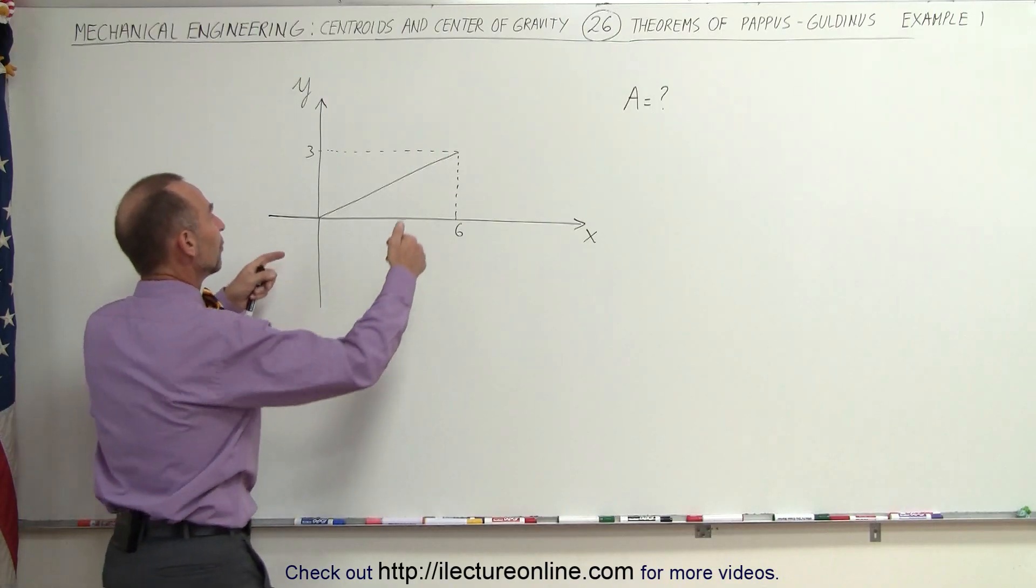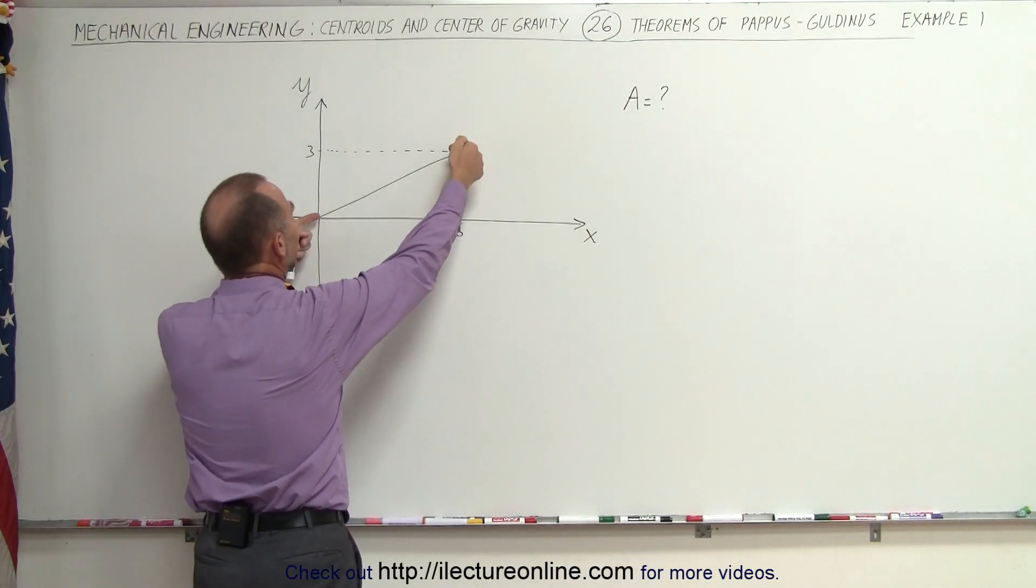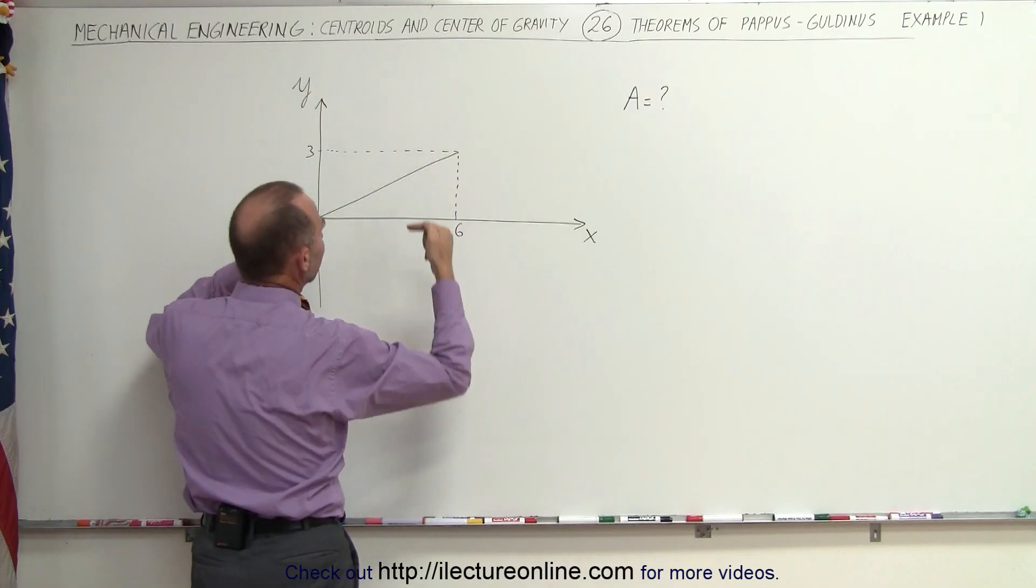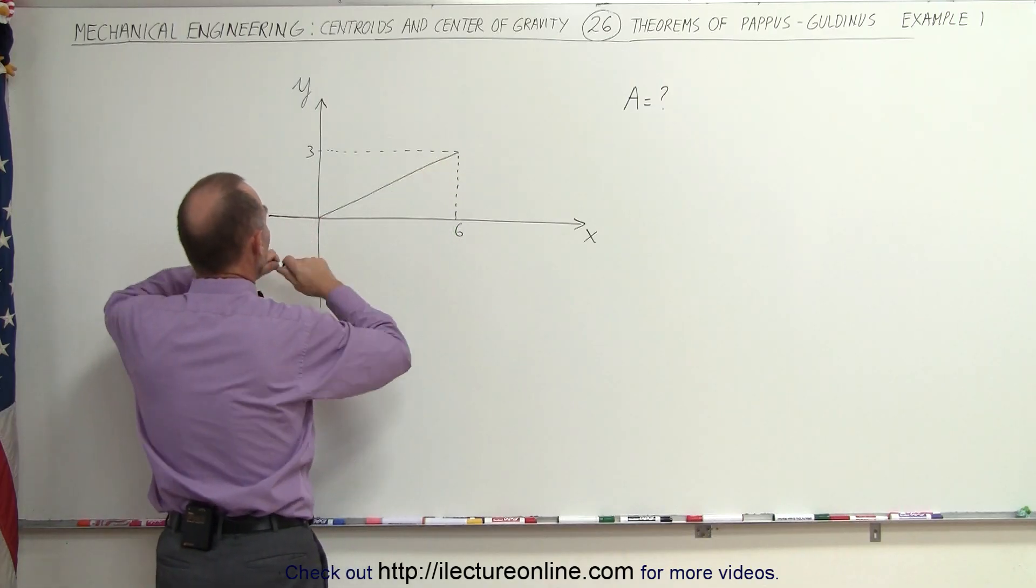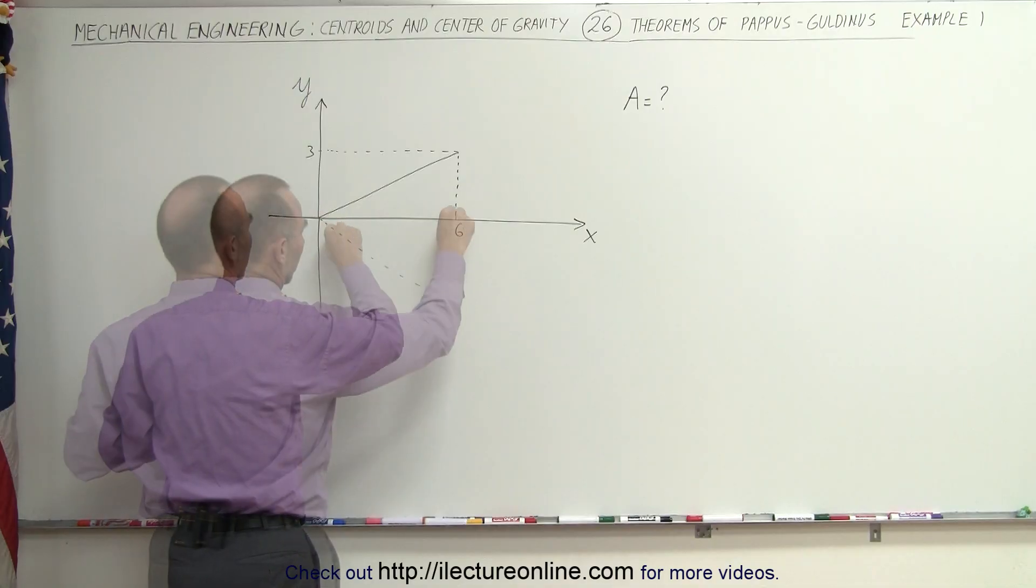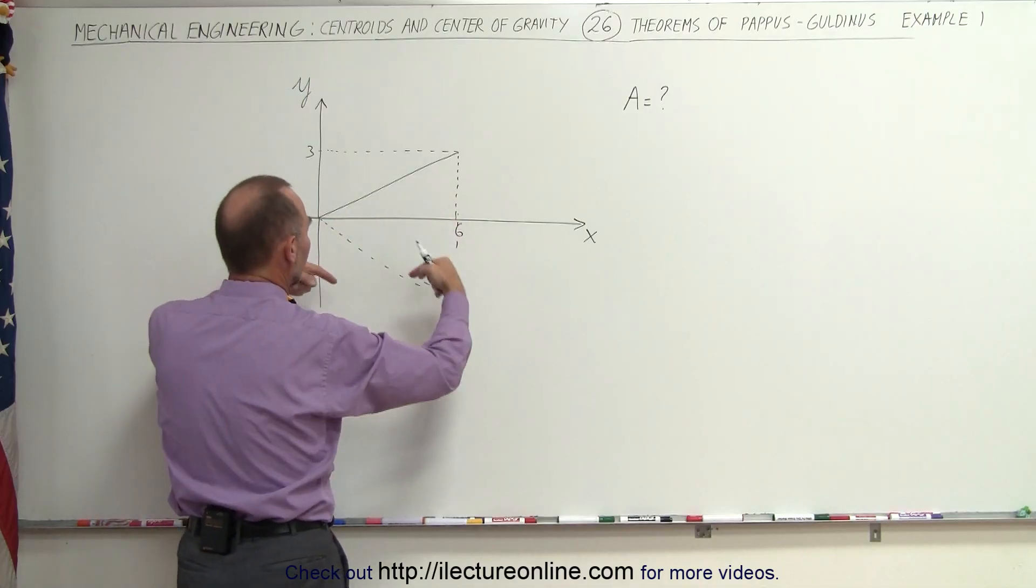We're trying to find the area of the object that we get when we rotate this around the x-axis. When we rotate it around, it will look like a cone, like so when we rotate this all the way around.